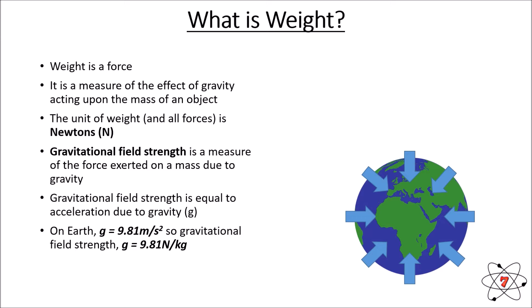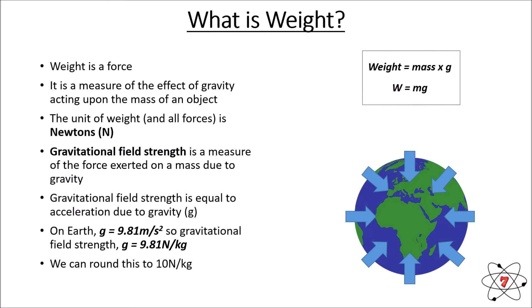We can round gravity to 10 newtons per kilogram for simplicity — because gravity is pulling down at 9.81 meters per second squared, a mass of 1 kilogram has a weight of 9.81 newtons. The key equation is: weight equals mass times g, where g is our gravitational field strength. Written as W = mg, these are really important equations that you are going to need to apply.